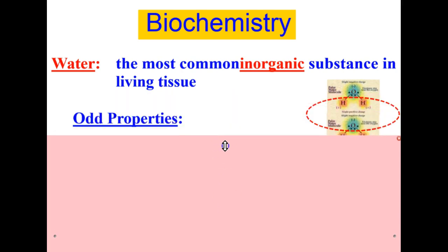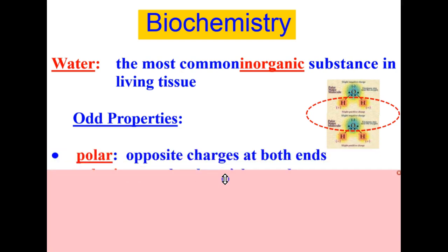Water has some pretty odd properties. Water is what is known as polar. That means that it has opposite charges at both ends of its molecule. Over here in this diagram, you can see that in a water molecule that the H ends of the water molecule are positively charged. And the O end of the water molecule is negatively charged.